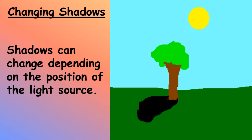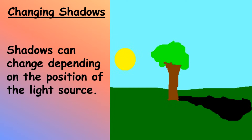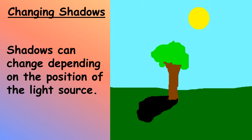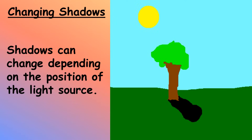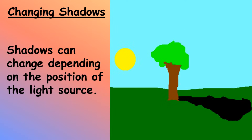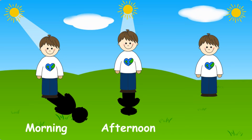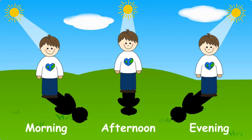Changing shadows. Shadow can change depending on the position of the light source. Here we can see that as the sun changes its position in the morning, afternoon, and evening, the shadow also changes its position and size.